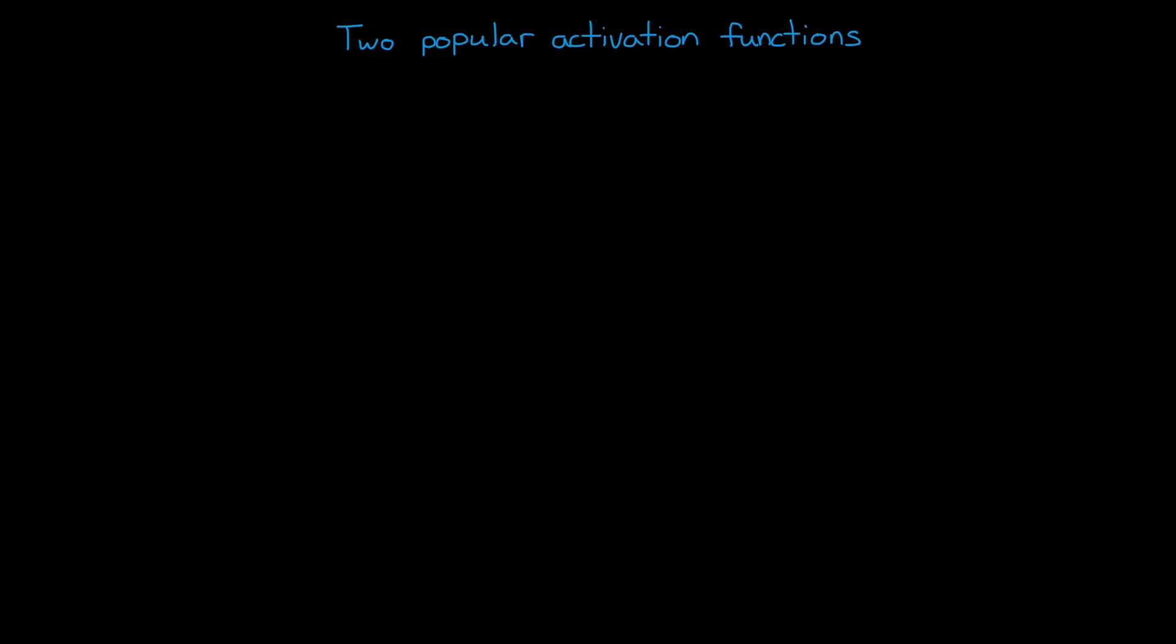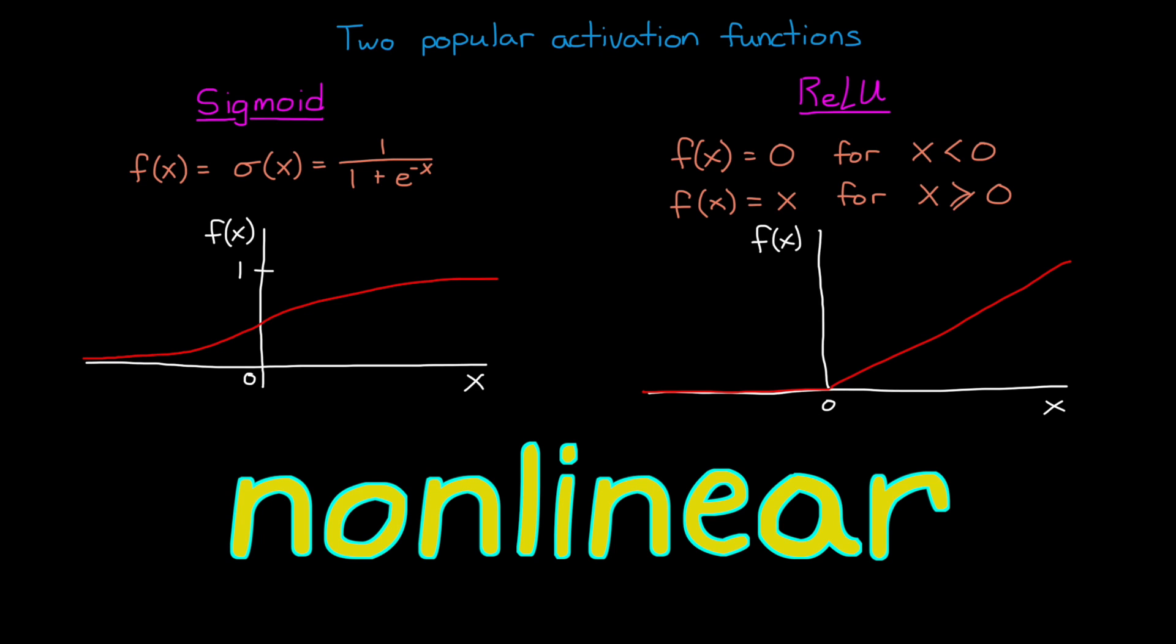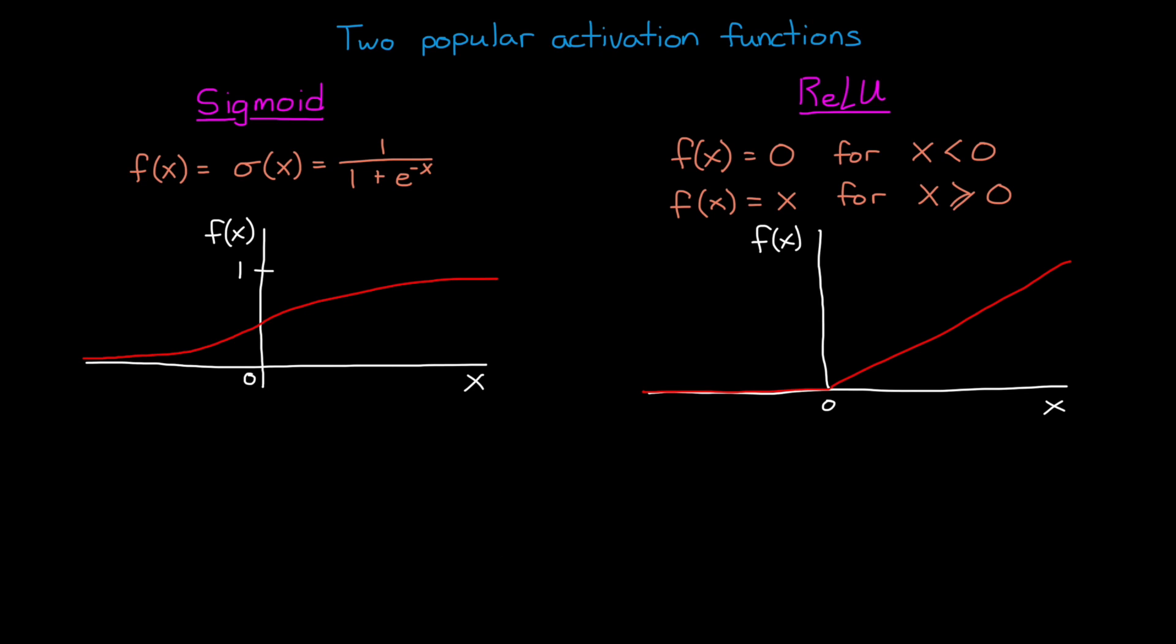And two popular activation functions are the sigmoid, which squishes the node value down between 0 and 1, and the ReLU function, which basically zeros out any negative node values. There are a number of different activation functions, but what they all have in common is that they are nonlinear, which is critical to making a network that can approximate any function. Now, as to why this is the case, I really like the explanations from Brendan Fortuner and Michael Nielsen, who show how it can be demonstrated with the ReLU and sigmoid activations, respectively. I've linked to their blogs in the description.